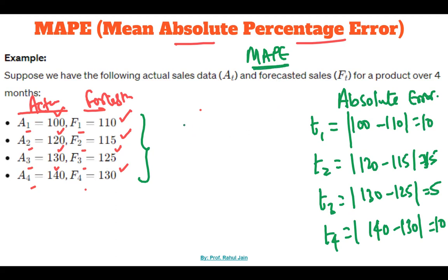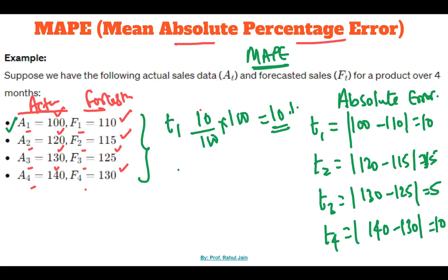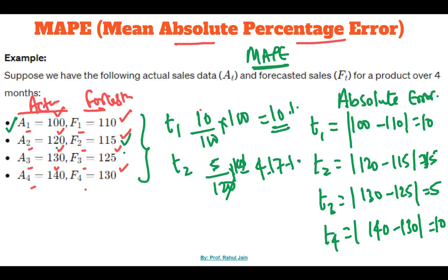Now if we go to the mean absolute percentage error, for month one: 10 divided by the actual value 100, multiplied by 100, gives 10 percent — that is the percentage error for forecasting sales in month one. In month two, the difference is 5 divided by the actual value 120, multiplied by 100, which gives 4.17 percent. So in month two the percentage forecasting error is 4.17 percent.